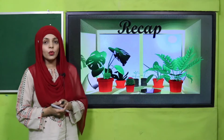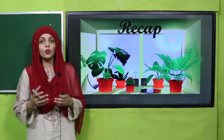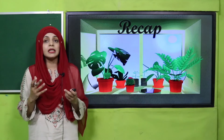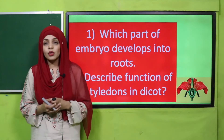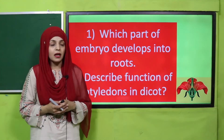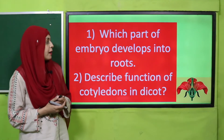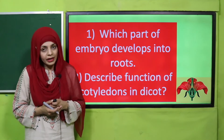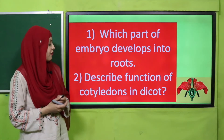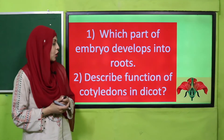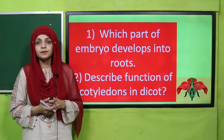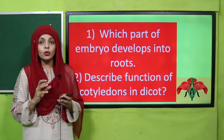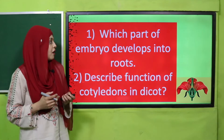Let's quickly move forward towards the recap and revise what we did in the previous lecture. Listen to the question very carefully and then answer: which part of the embryo develops into roots? Radicle — very good. Describe the function of cotyledons in a dicot — very good, they store food and provide energy.